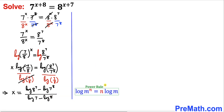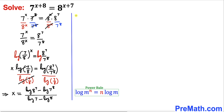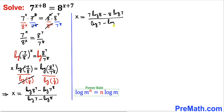Applying the power rule, we move the exponents to the front. So the numerator becomes 7 times log 8 minus 8 times log 7, and the denominator is log 7 minus log 8.